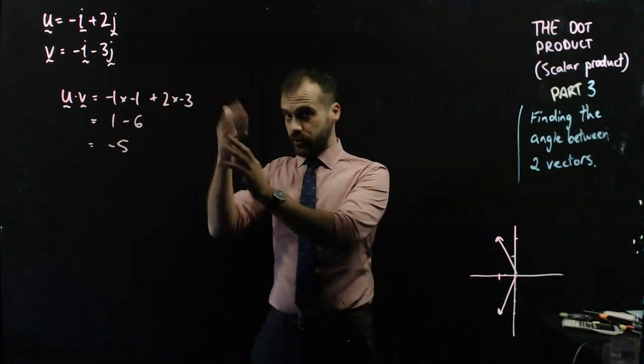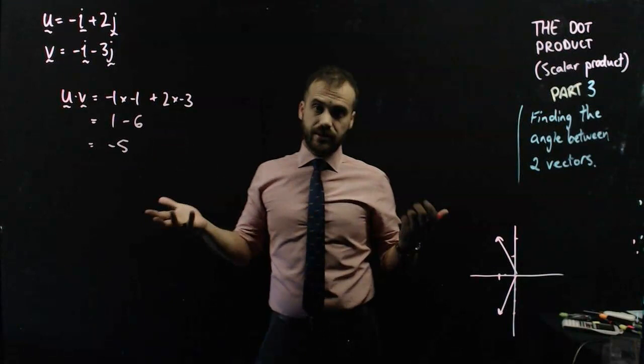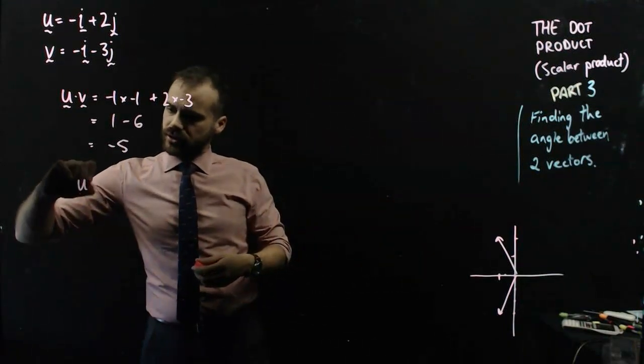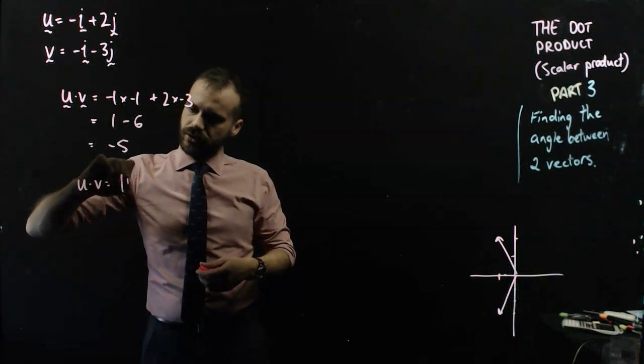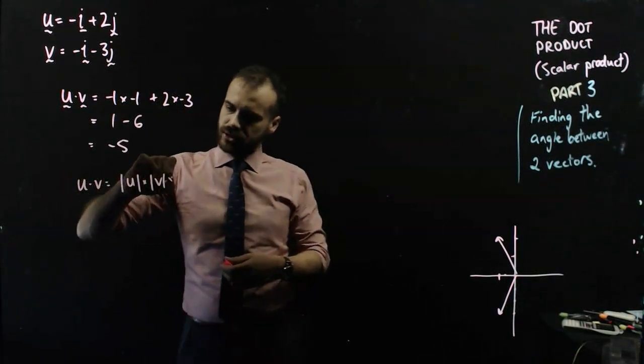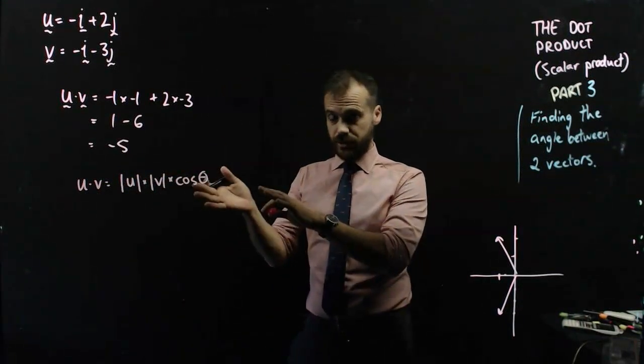Now, that's one way to figure out the dot product. The other way to figure out the dot product, and the thing that's going to make us be able to do this, is the fact that the dot product is also equal to the magnitude of u times the magnitude of v times cos of the angle between them. So, we're going to use that formula.